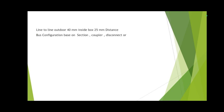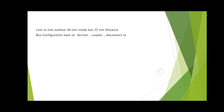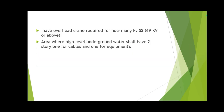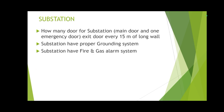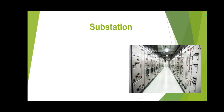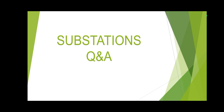Receptacles should be placed inside or outside every 6 meters, and a power transformer surge arrester shall be installed. The most important question: the line-to-line outdoor clearance is 40 mm per kV. Remember, this distance is per kV — so if it's 10 kV, you maintain 400 mm. Inside a junction box or panel, the clearance is 25 mm per kV. These are the main questions from the main video, which was prepared in the electrical QAQC course.